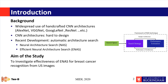Most handcrafted CNN architectures are designed for natural image classification — for example, AlexNet, VGGNet, and GoogleNet. Designing an architecture for your dataset manually takes time and requires more experience, because you have to fine-tune all of the hyperparameters manually. Instead, there is another technique called NAS.